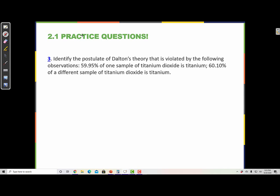So this one is postulate number 4, which says that a compound consists of atoms of two or more elements combined in a small whole number ratio, and in a given compound the number of atoms of each of its elements are always present in the same ratio.